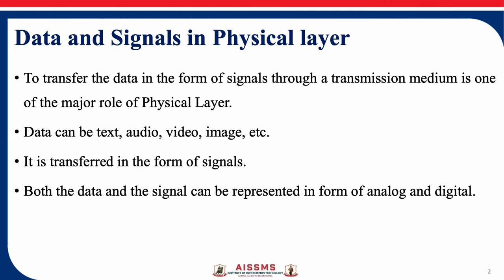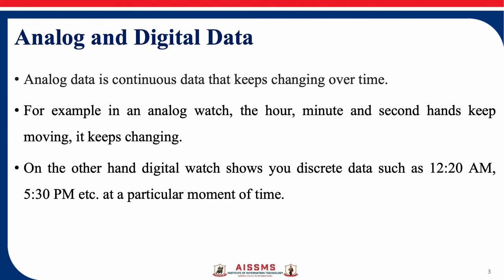Both data and signals can be represented in the form of analog and digital. Analog data is continuous data that keeps changing over time. For example, in an analog watch, the hour, minute, and second hands keep moving. On the other hand, a digital watch shows discrete data such as 12:20 AM or 5:30 PM at a particular moment of time. So analog data is continuous data and digital data is discrete data.